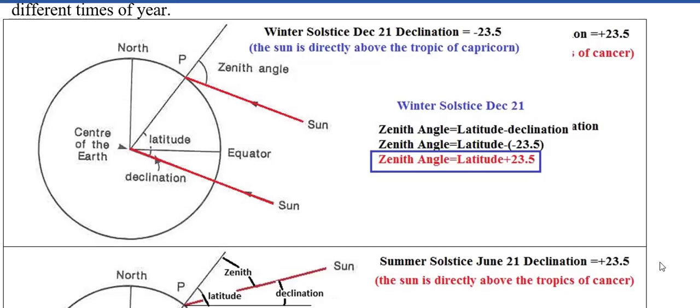Here we take a quick look at how to determine the zenith angle for different times of year. We're going to focus on the winter solstice, December 21st, the summer solstice, June 21st, and also the equinoxes, March 20th and September 22nd.